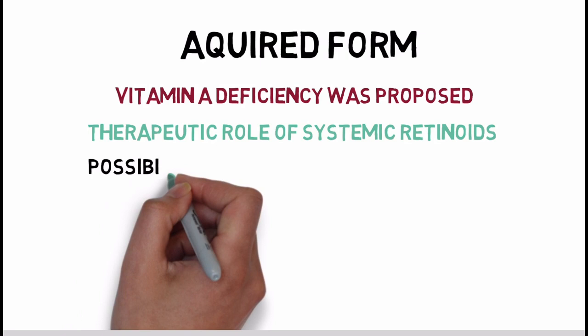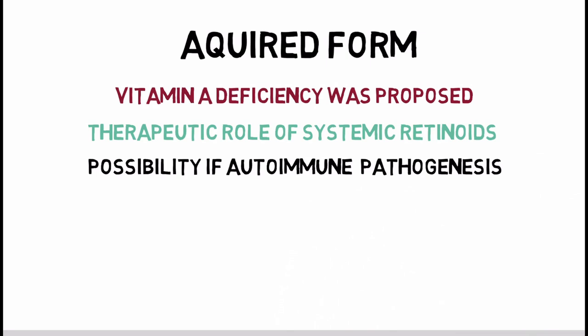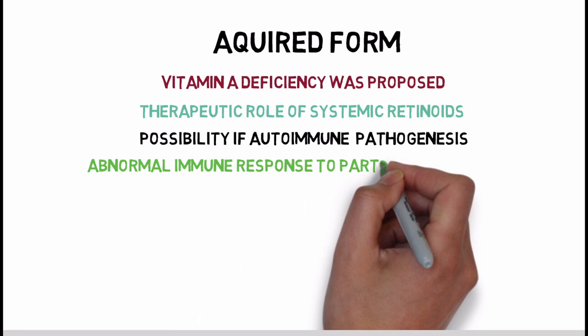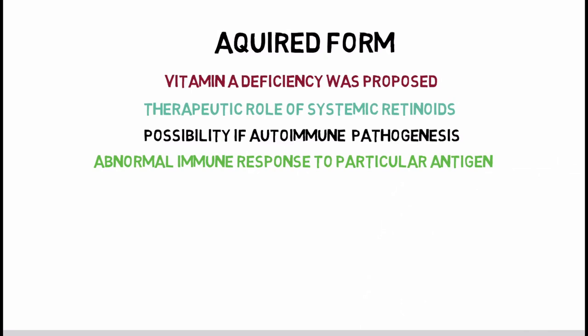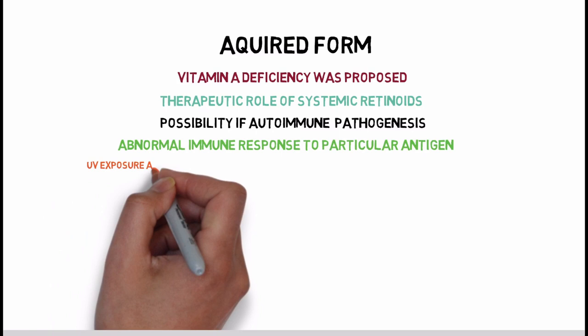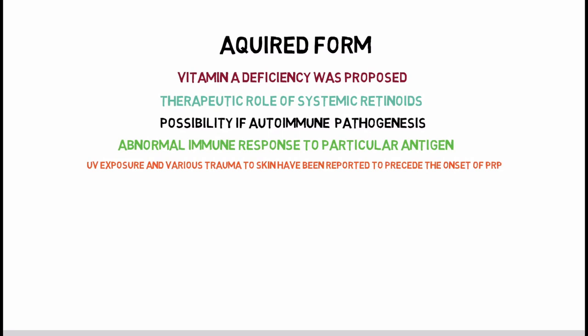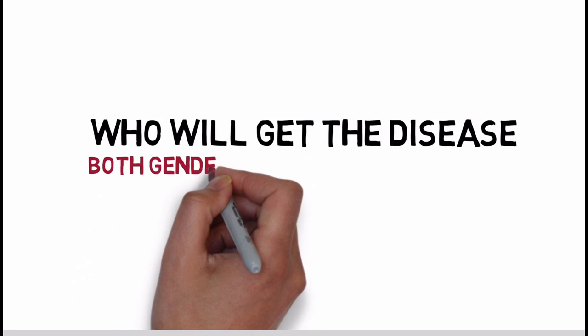Pityriasis Rubra Pilaris has been associated with certain autoimmune diseases, so an autoimmune pathogenesis has also been proposed. Some believe it is an abnormal immune response to a particular antigen, suggested by the coexistence of PRP with HIV infection and malignancies. Certain triggers have also been identified for the acquired form, including UV exposure, various trauma, and certain drugs.